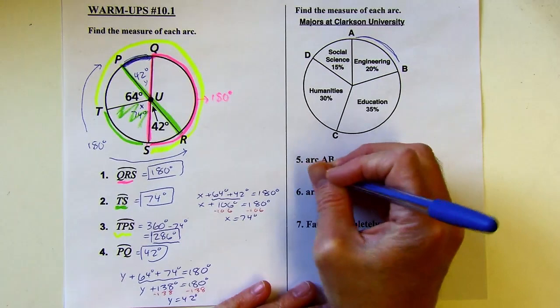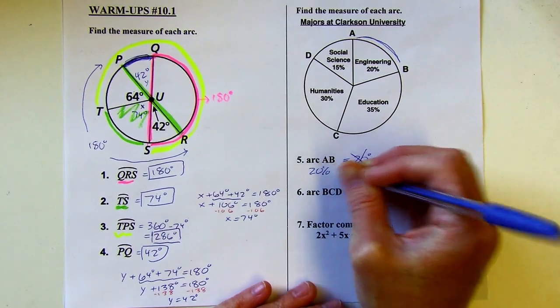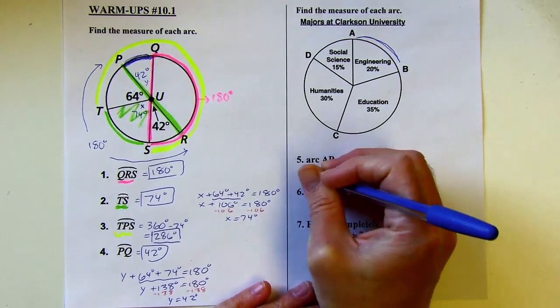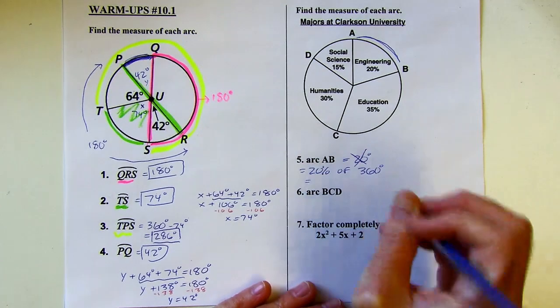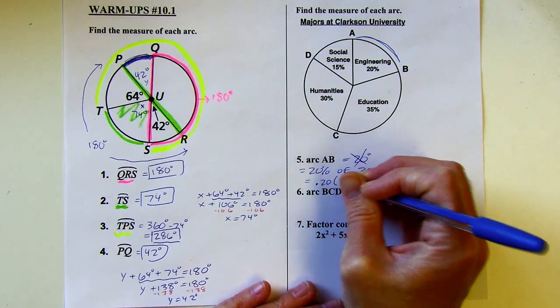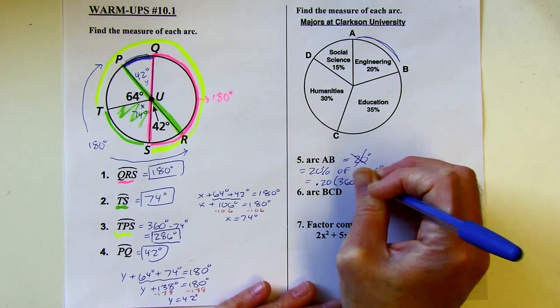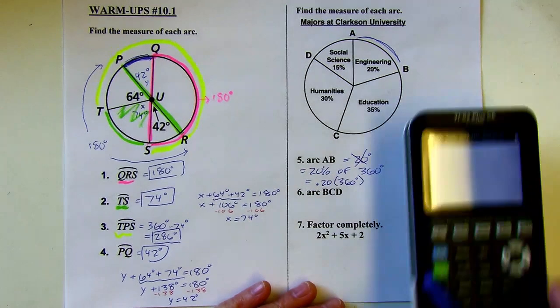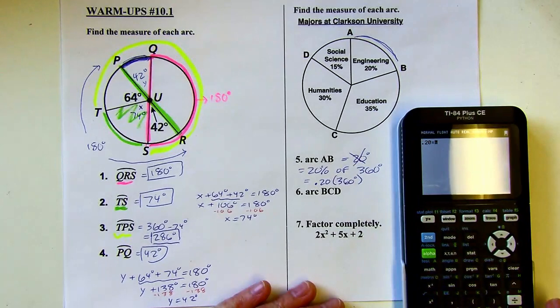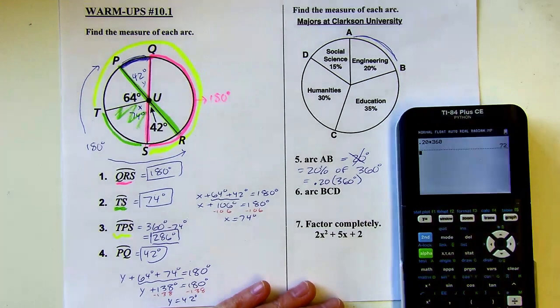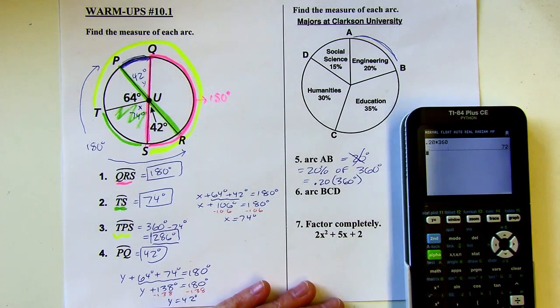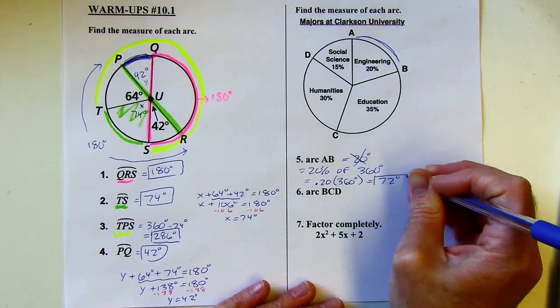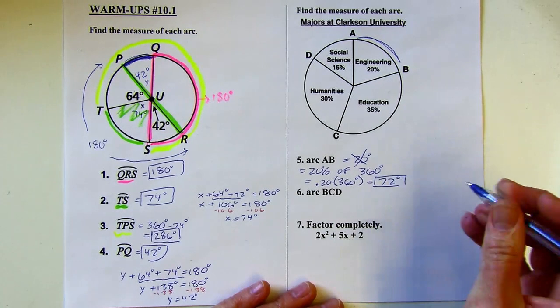And there are many different ways that you can find 20% of 360 degrees. With the calculator, you can just do this: 0.20 is the decimal version of 20%, so I can just do 0.20 times 360. That's going to give me 72 if I can get the glare off that. There it is. So this is 72 degrees, not 20 degrees.